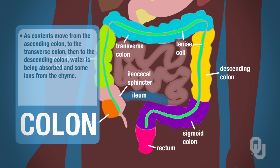As contents move from the ascending colon to the transverse colon to the descending colon, water is being absorbed and some ions are being absorbed from the chyme. The sigmoid colon is more of a storage depot for what's left over — whatever didn't get absorbed will be stored in the sigmoid colon.